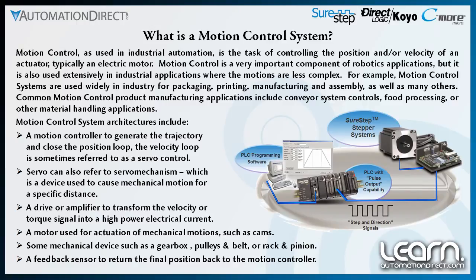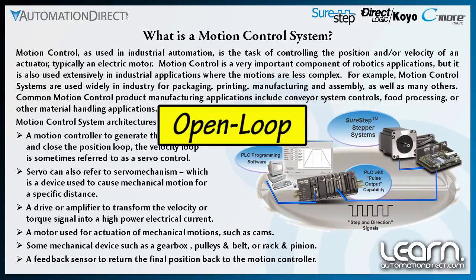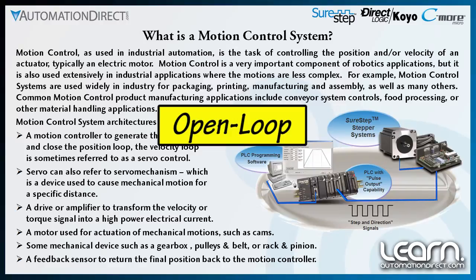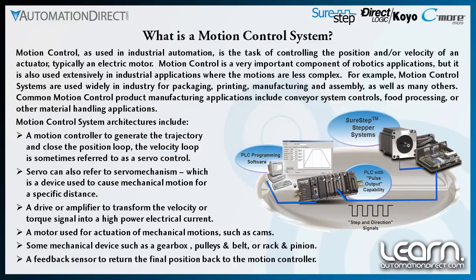With some motion control systems, such as a servo mechanism, a feedback sensor is used to return the final position signals back to the motion controller. This is commonly referred to as a closed loop system. If there is no feedback sensor or signal, then we would refer to our motion control system as being open loop. The motion control system I will use in my demonstration with the SureStep stepping system is an open loop type system, meaning there is no feedback and I am relying on the stepper motor with the drive to respond accurately to the number of pulses that my DL05 PLC with high speed counter interface module controller will produce.